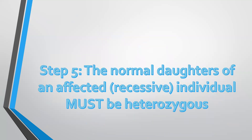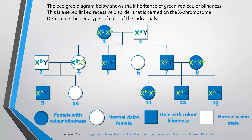Step five: the normal daughters of an affected individual must also be heterozygous. Number one is affected with two recessive alleles, so she had to give a recessive allele to each of her children. Number six, who we are interested in, gets a recessive allele. Being normal, she must have inherited a dominant capital B allele from her father, number two, making her heterozygous.